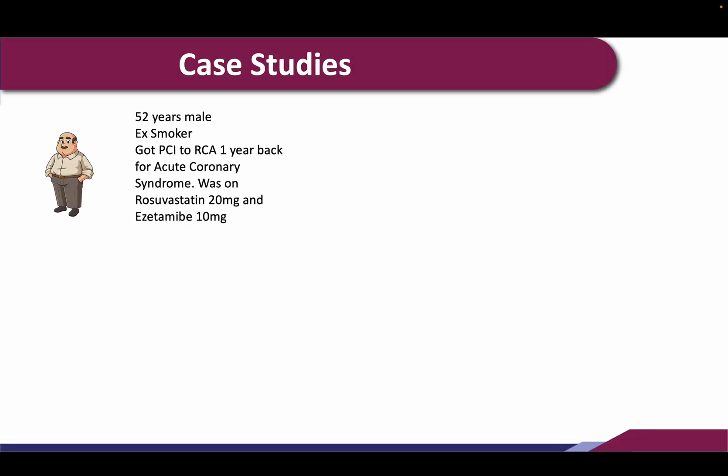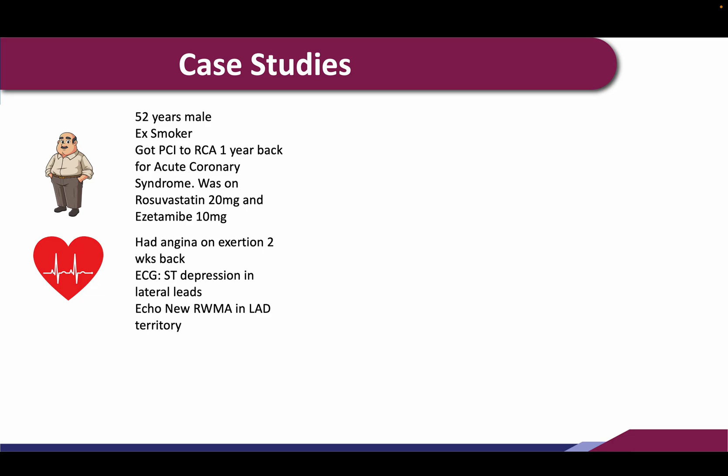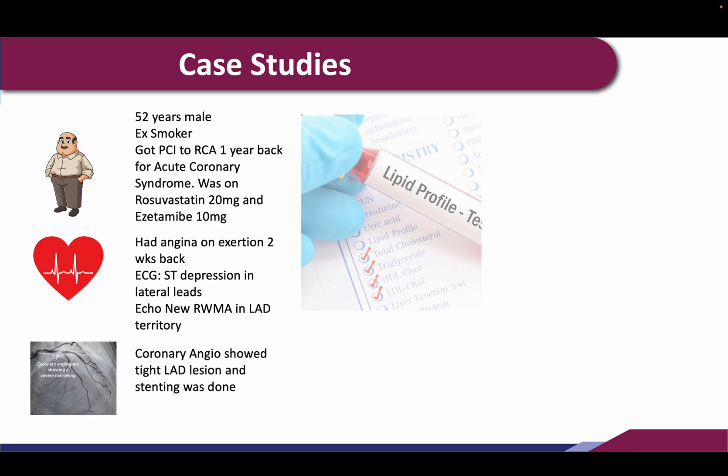Another patient: a 52-year-old male who quit smoking a year ago when he had an angioplasty for a right coronary artery inferior myocardial infarction. He was put on rosuvastatin and ezetimibe 10 mg. After six months, because LDL targets were not achieved, he had angina on exertion and ECG showed ST segment depression in the lateral leads. Echo showed a new regional wall motion abnormality in the LAD territory. He underwent angiography and got stenting done to the left coronary artery.